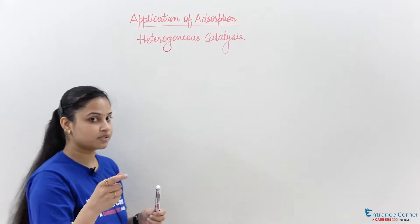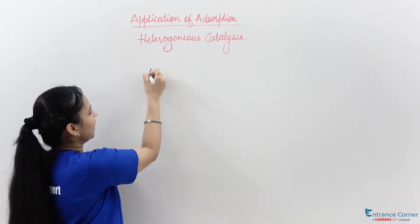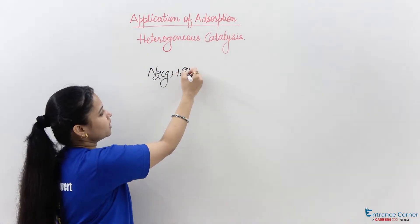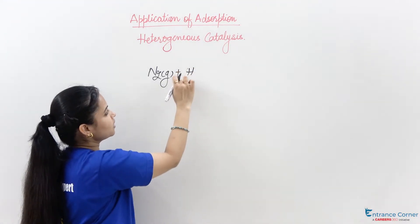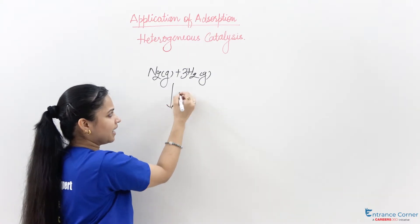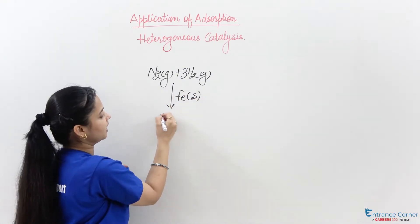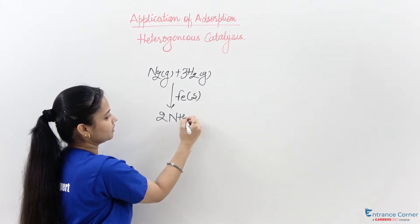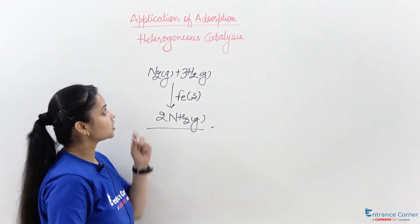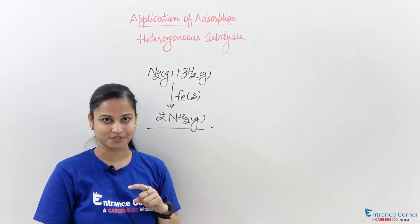For example, in the manufacturing of ammonia using iron as catalyst: N₂(g) + 3H₂(g), with iron in the solid state as catalyst, gives 2NH₃(g). This was about heterogeneous catalysis and the application of adsorption. Thank you.